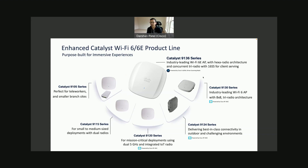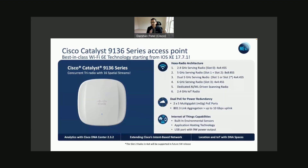What's best about the Catalyst 9136 access point? It is the first wide radio with 16 spatial streams for client serving. Think about it — 16 spatial streams. It is the best in class after our 9130 802.11ax, and it's the next step forward.